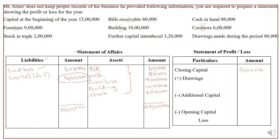Now calculating the statement of profit. Closing capital is 16,40,000. Add drawings of 80,000 to get 17,20,000. Deduct additional capital (further capital) of 3,20,000 to get 14,00,000. Deduct opening capital of 15,00,000. The answer is 14,00,000 minus 15,00,000, which gives a negative answer of minus 1,00,000. A negative answer means there is a loss, so there is a loss of 1,00,000 rupees.